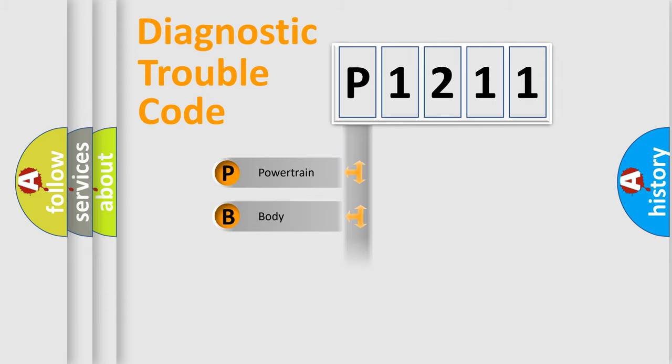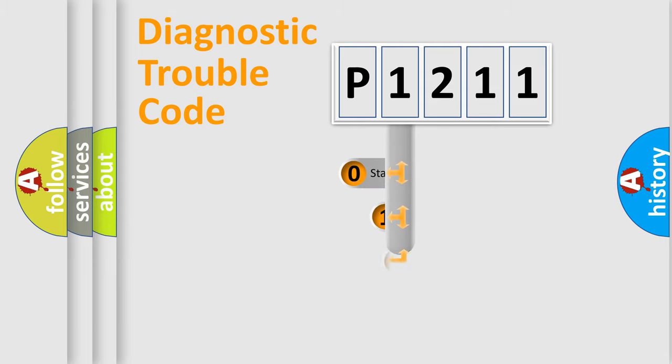Powertrain, Body, Chassis, Network. This distribution is defined in the first character code.